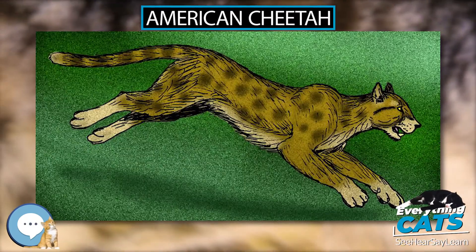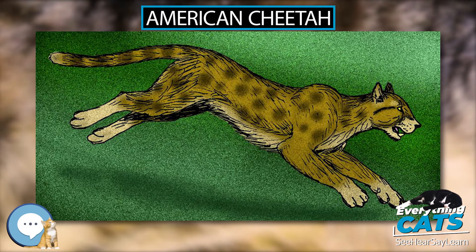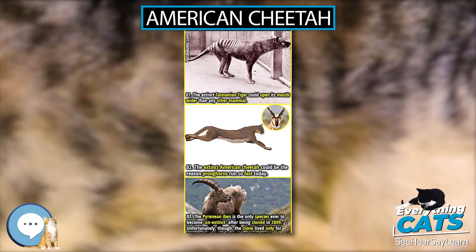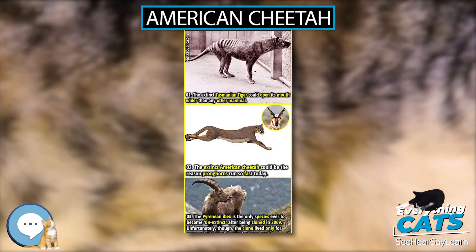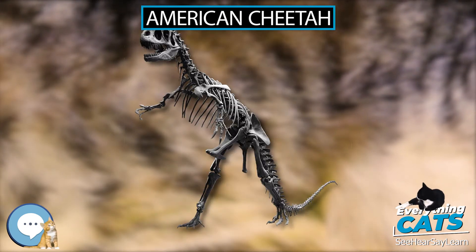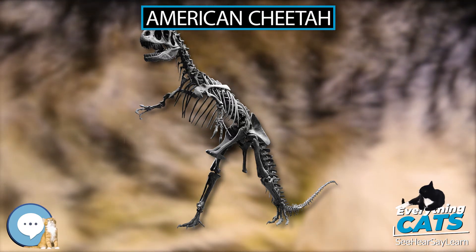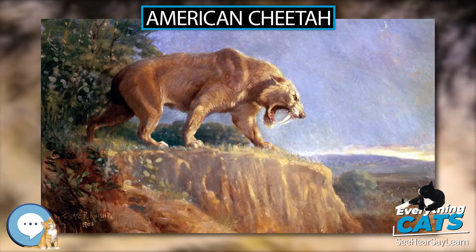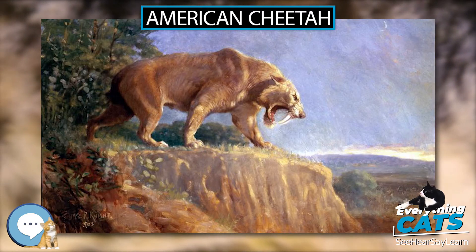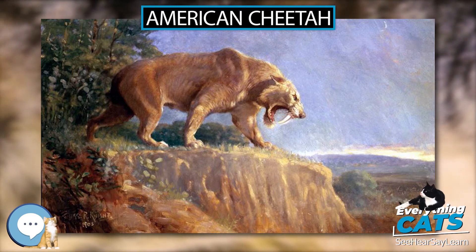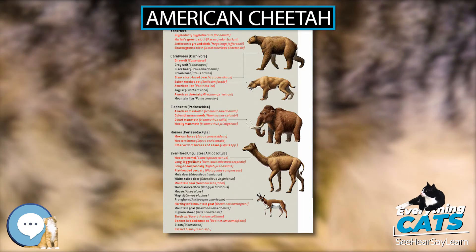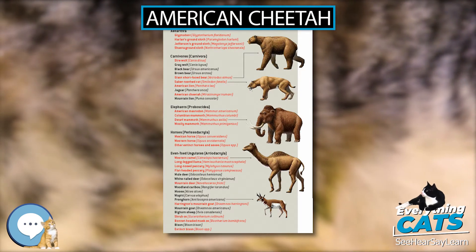The American cheetah is either of two feline species of the extinct genus Morachinonyx, endemic to North America during the Pleistocene epoch, 2.6 million to 12,000 years ago, and morphologically similar to the modern cheetah, Acinonyx jubatus. These cats were originally known from fragments of skeletons, but nearly complete skeletons have been recovered from Natural Trap Cave in northern Wyoming.